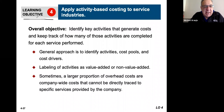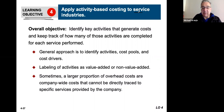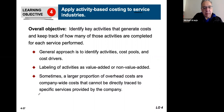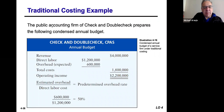Learning Objective 4 looks at ABC applied to service-based industries. We already know what activity-based costing looks like for manufacturers, but this part of the chapter says service industries also use ABC. So how does it look different from a service industry than what we've been looking at for manufacturing? That's basically what this looks at.